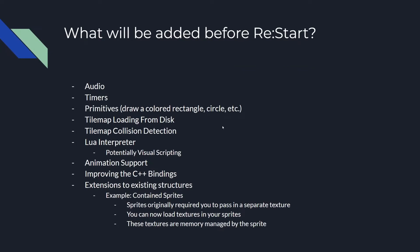Before the game jam competition, things I want to add include: audio — playing sounds and playing music; timers, which will be useful for animations and timing things; primitives — being able to draw colored rectangles, circles, etc.; and the ability to load a tile map from disc, which could be very useful for loading an entire pre-created map. You could then have tile map collision detection so that a sprite — your character — walking through a tile map can collide with certain objects.